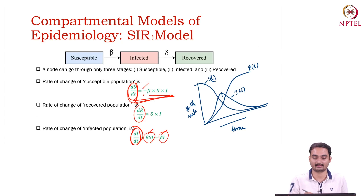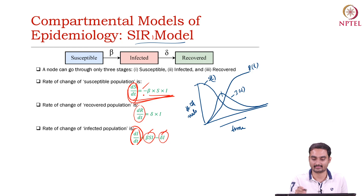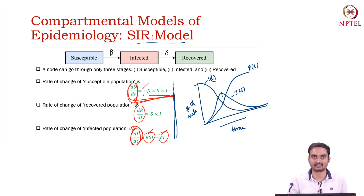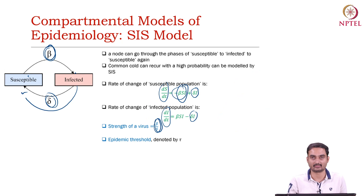All these models like SIR and SIS take a subset of these states and then create a state transition diagram. For example, in the SIR model we discussed last day, a susceptible citizen gets infected with probability beta, and an infected person gets recovered with probability delta, and so on. We derived ordinary differential equations and can essentially measure the number of susceptible and recovered users at a given point in time.